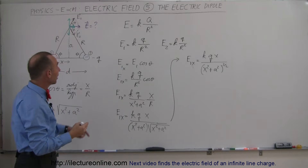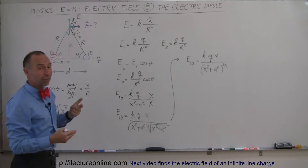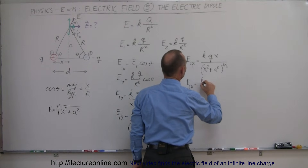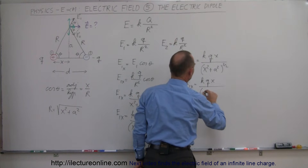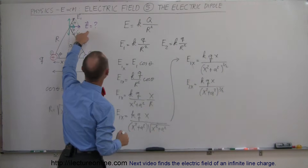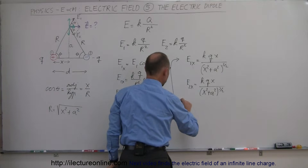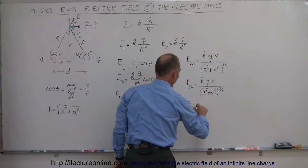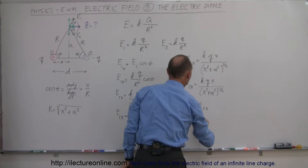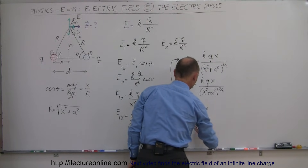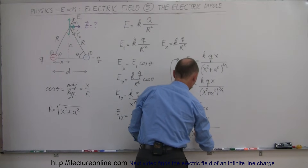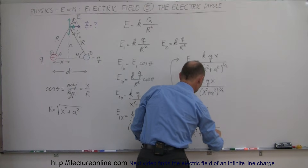That's E1 in the x direction, and because of symmetry, E2 in the x direction is the same: E2x = kQx/(x² + a²)^(3/2). The total electric field E is the sum of the two x components, so E = E1x + E2x = 2kQx/(x² + a²)^(3/2).